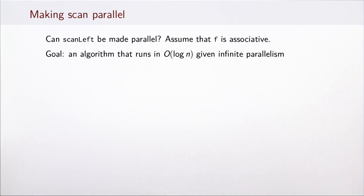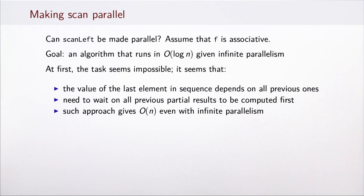Can we make scan left a parallel operation? Remember, we are assuming that f is associative. We have the ambitious goal of an algorithm that runs in O(log n) given infinite parallelism. At first, this seems almost impossible, because the value of each element depends on the previous one. Even if we parallelize the individual applications of f, we cannot parallelize the traversal of the array itself, so this would still give a linear algorithm even with infinite parallelism.